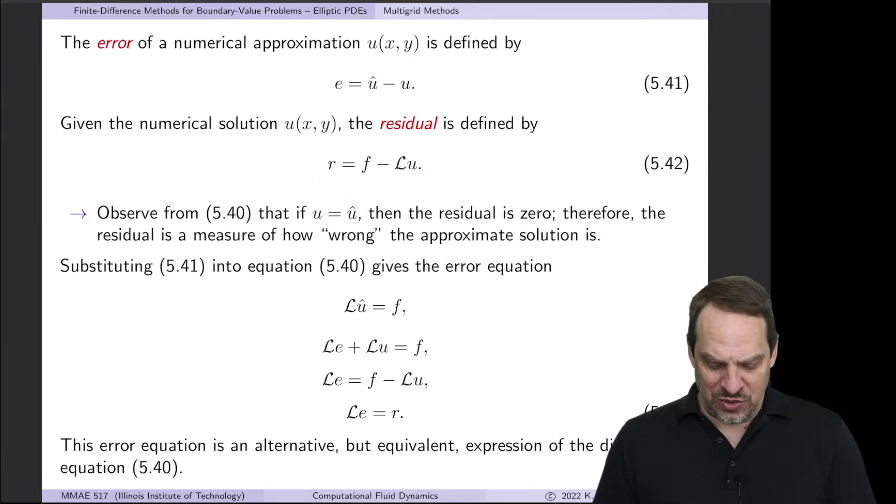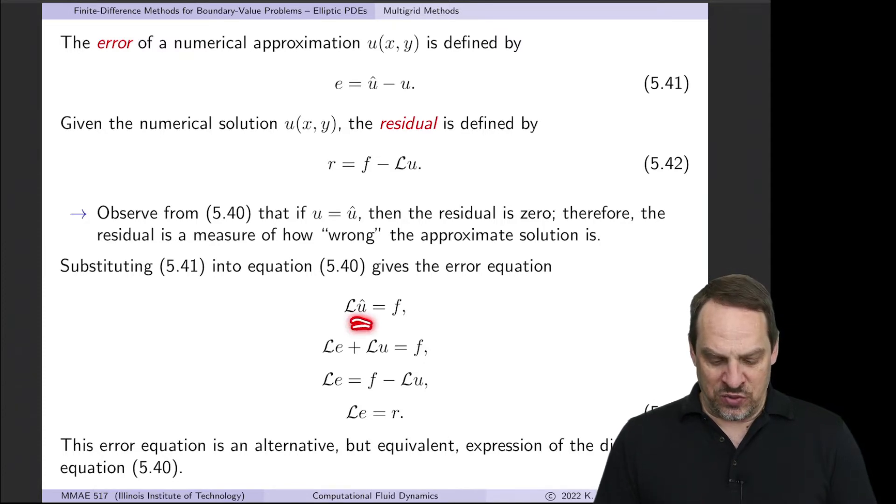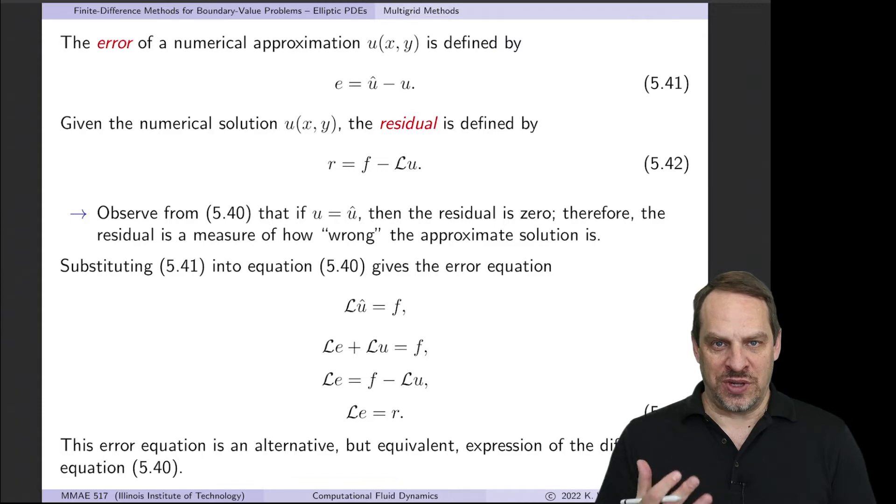So let's start with this representation. L u hat is equal to f. Our difference operator operating on the exact solution is equal to f. From this expression for the error, u hat is equal to e plus u. So let's substitute that in here. So we have L operating on e plus L operating on u is equal to f. Solving for Le, that's equal to f minus Lu. But f minus Lu is just the residual. So what we've done is shown a different way to express the same finite difference equation. Instead of being for u hat, the original dependent variable, it's now for the error. And you'll notice that the right-hand side is now the residual. So this equation is equivalent to this equation, but now for the error. We'll see why that's useful and helpful in a little bit.